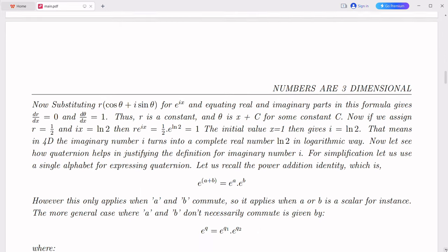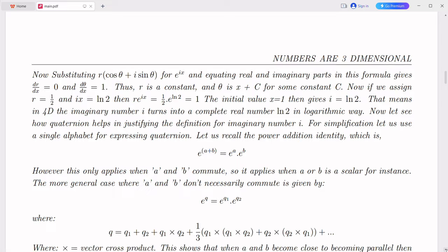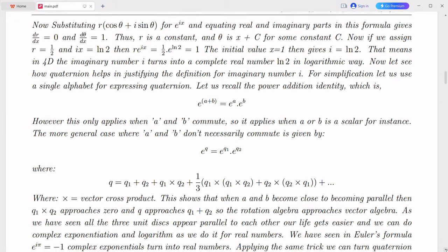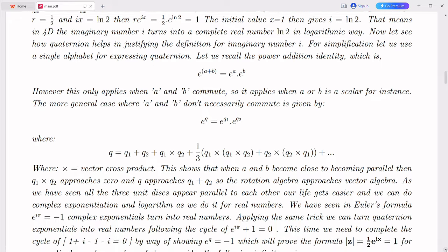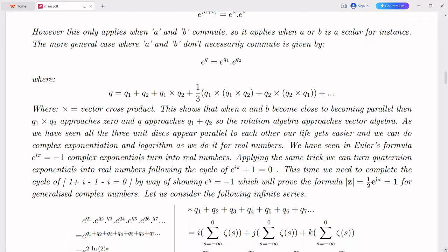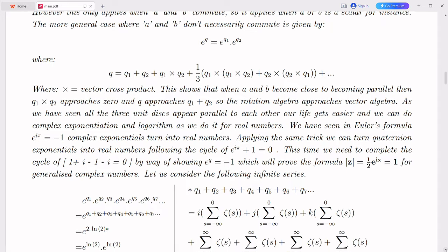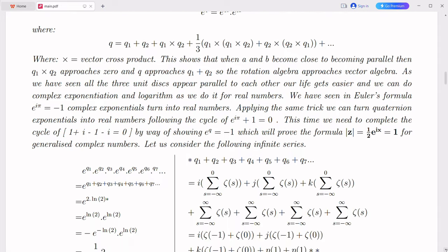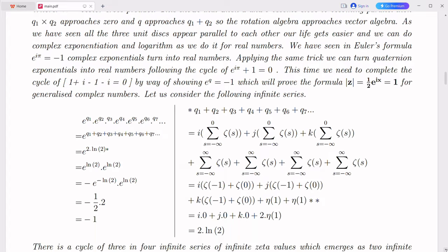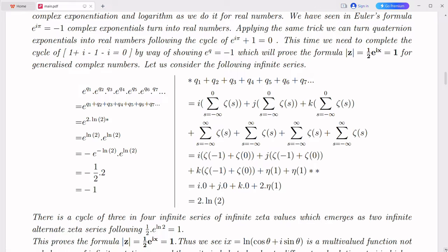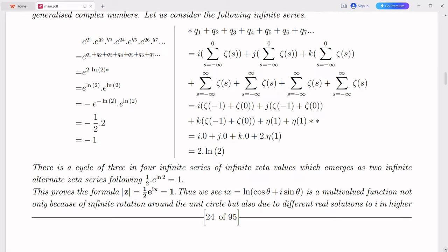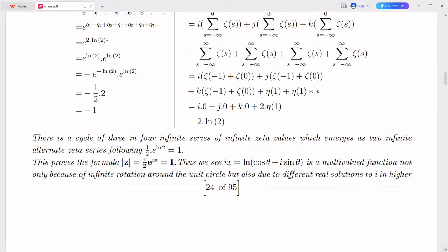Similarly, the Goldbach conjecture, which states that every even integer greater than 2 can be expressed as the sum of two prime numbers, could also be approached using the prime number theorem and the dual nature of numbers. By analyzing the distribution of prime numbers and their properties, we can provide a minimal proof that supports the Goldbach conjecture. It's important to note that while these minimal proofs may provide insights and a deeper understanding of number theory problems, they may not necessarily be considered complete or rigorous proofs. Number theory problems, especially those that have remained unsolved for a long time, often require extensive mathematical techniques and rigorous proofs to be fully resolved.